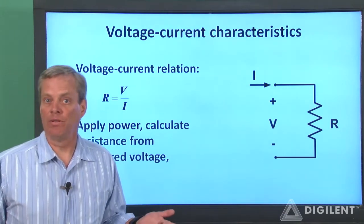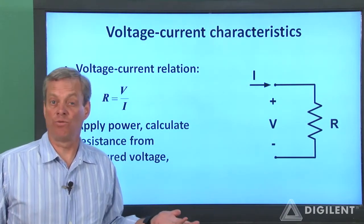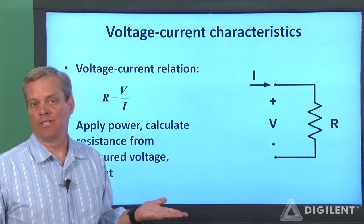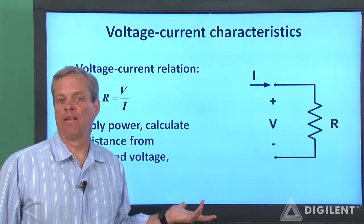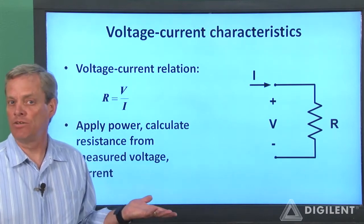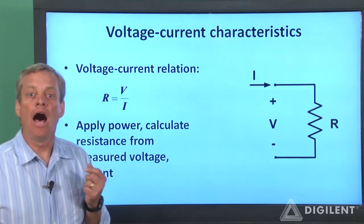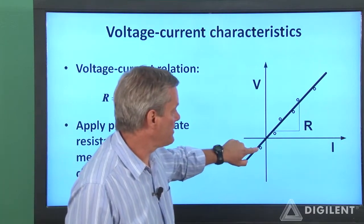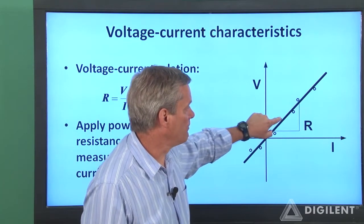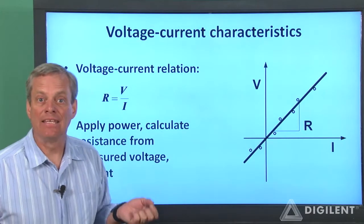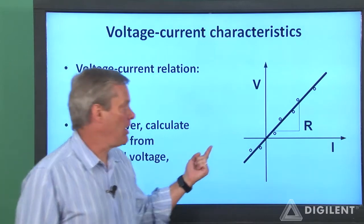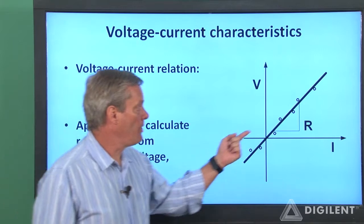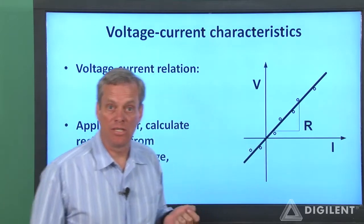Then we can, for example, identify bad data points and disregard them, or average the calculated resistances so that a little error in any one measurement doesn't dominate our results. Another, and possibly better, approach is to plot the various combinations of voltage and current against one another. Then we can draw a line that best represents the data. The slope of this line is the resistance.